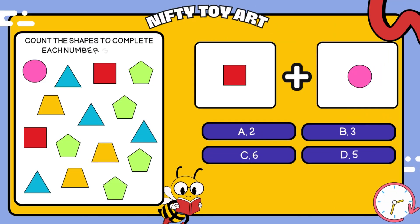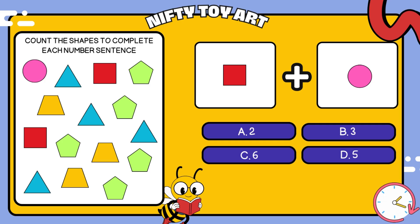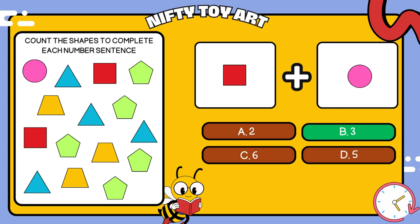Count the shapes to complete each number sentence. I have a square plus circle. How many all together? That's right, three.